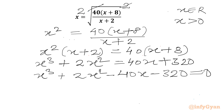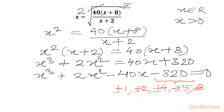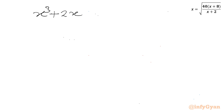Now we can find the eligible factors of the leading coefficient and constant term. The factors of 320 include ±1, ±2, ±4, ±5, ±8, ±10, and so on. The leading coefficient is 1, so its factors are ±1. We take the ratio for our base solution candidates. The equation is x cubed plus 2x squared minus 40x minus 320 equals 0.